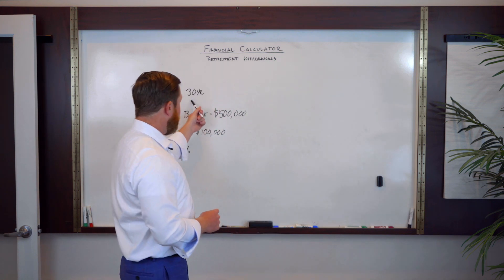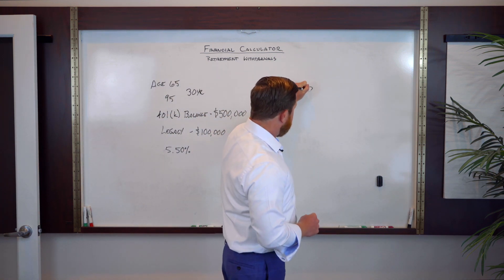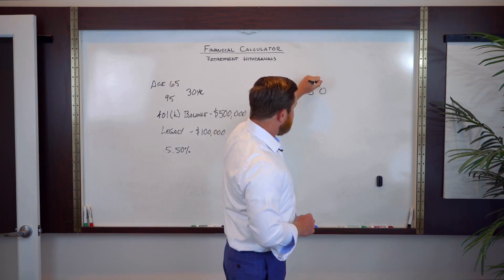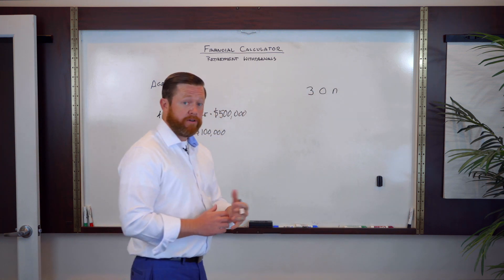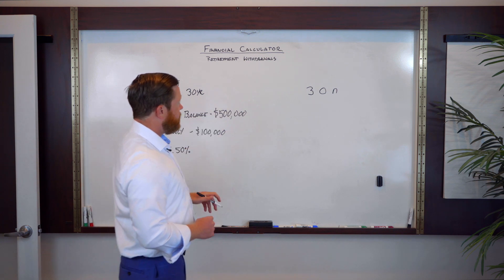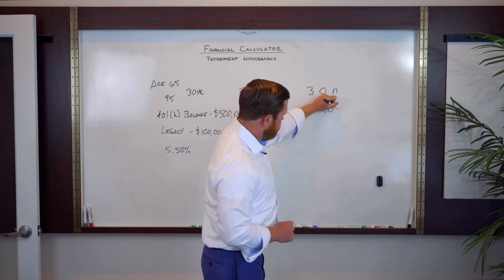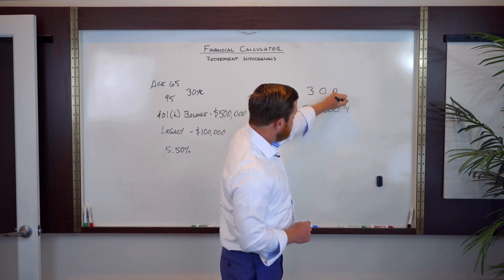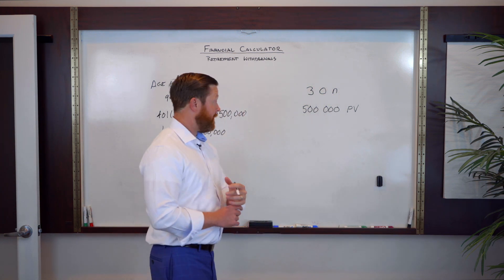All right. So the first thing is we've got 30 years. So the first thing we're going to enter into the financial calculator is 30. And then at the top left, we have N, and that's for number of periods. The next thing we're going to look at is our $500,000. So we're going to go 500,000. And then this is PV. So that is present value.